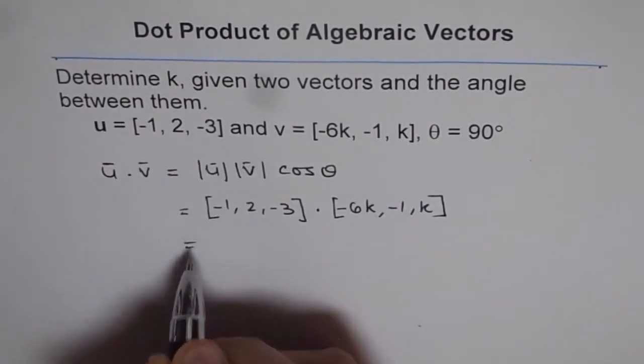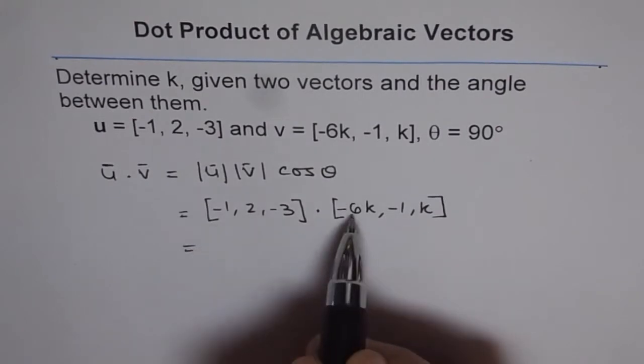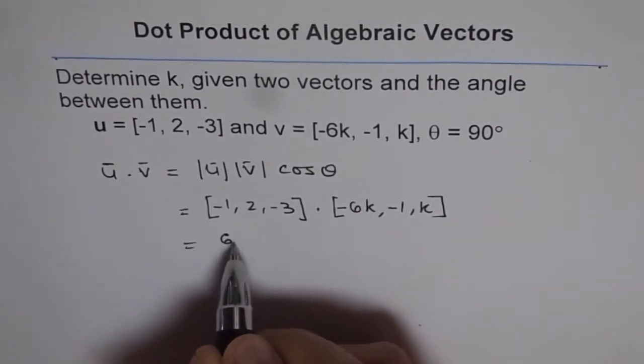Now if you do this dot product, you get (-1)(-6k) = 6k,